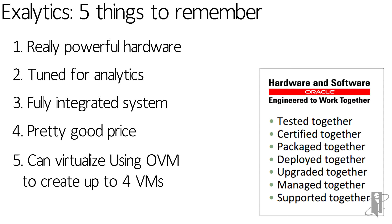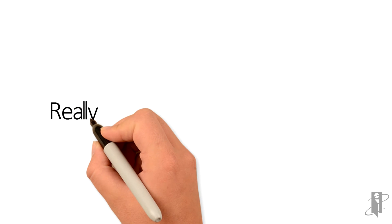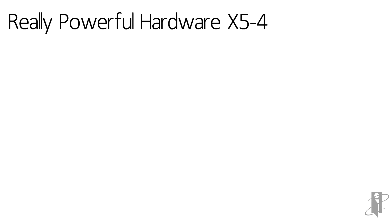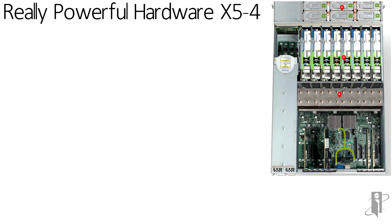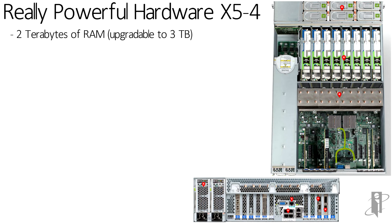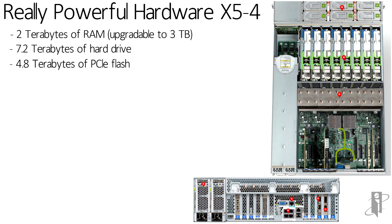Now let's talk about the really powerful hardware. There are two versions of the Exalytics available right now. You have the X5-4 — the X stands for Intel-based. This machine comes with two terabytes of RAM, upgradable to three terabytes, a 7.2 terabyte hard drive, and 4.8 terabytes of PCIe flash.